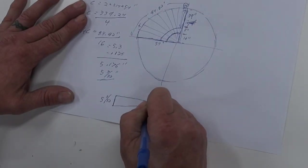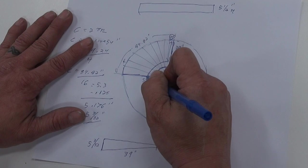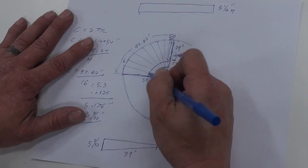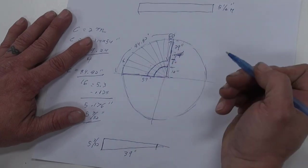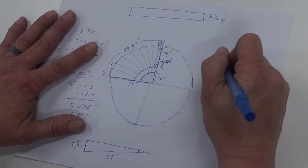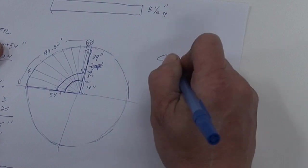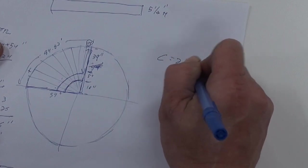So now what we need to do is we need to find this radius. So we can calculate the exact dimension of this. We're going to pull up 15 inches. So again, using pi, we're going to go C equals 2 pi r.